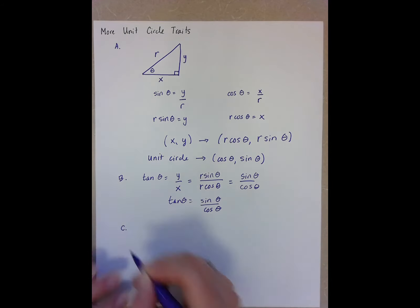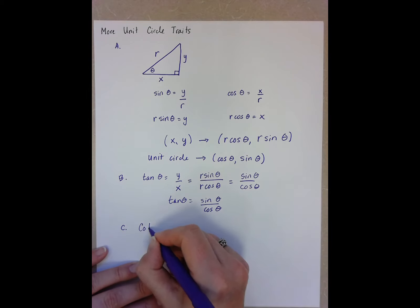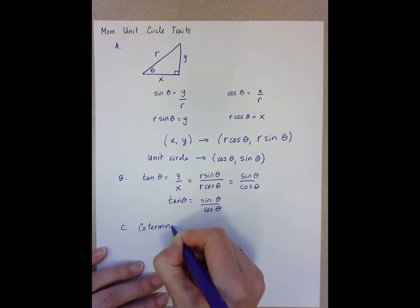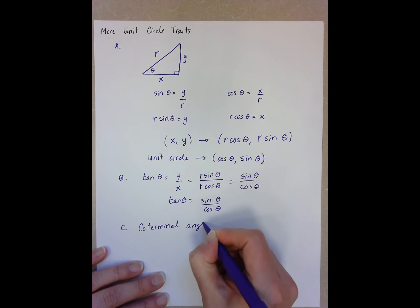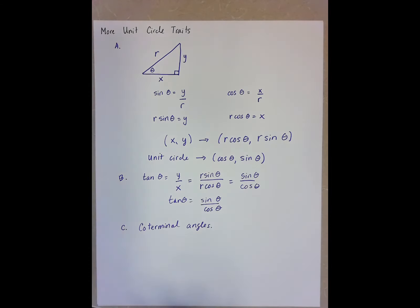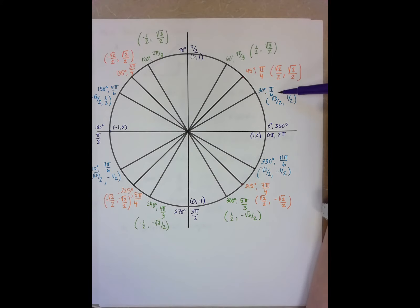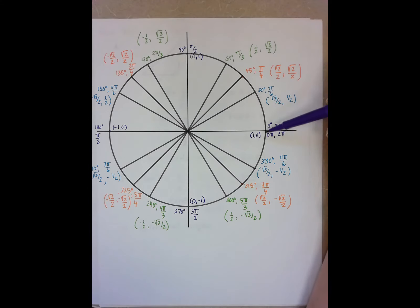Another important trait that we need to know about the unit circle is this idea of coterminal angles. So coterminal angles mean basically that there are lots of ways to land here. I could land here by going positive 30 degrees. I could land here by going negative 360 degrees.